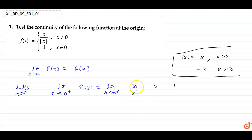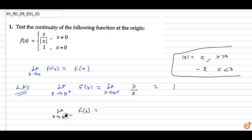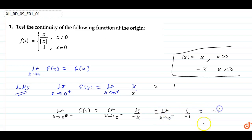Now for the limit as x tends to 0 minus of f(x), we have x upon minus x, because when x is less than 0, mod x equals minus x. Differentiating gives one upon minus one, so the answer is minus one.